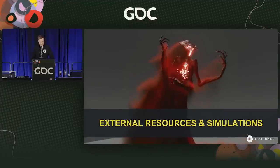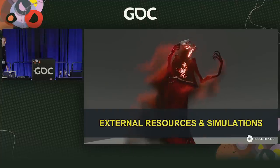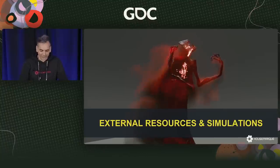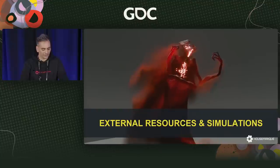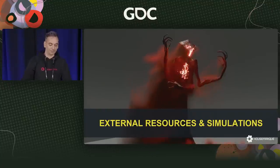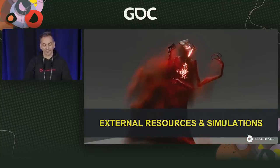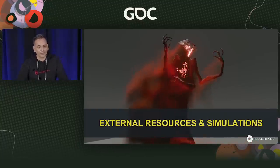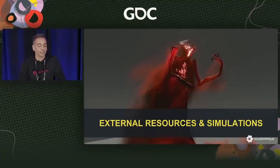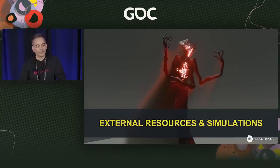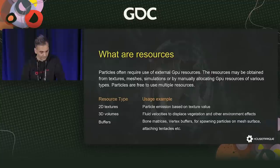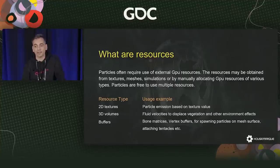That was the end of Risto's part. Next, Sharma will present external resources and simulations. By resource, we mean a GPU resource — something that the particle can read. Our particles are explicit in nature; they don't do anything on their own. For example, if you want to emit something from a mesh, you need to bind that mesh resource to the particle and manually look up the information from those buffers. Buffers could be 2D textures, 3D volumes, bone buffers, vertex buffers, index buffers, tangents, and similar things.